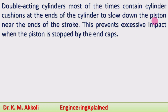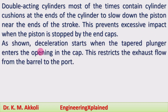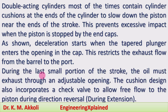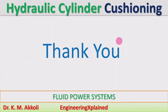Double acting cylinders most of the times contain cylinder cushions at the ends of the cylinder to slow down the piston near the ends of the stroke. This prevents excessive impact when the piston is stopped by the end caps. As shown, deceleration starts when the tapered plunger enters the opening in the cap — this restricts the exhaust flow from the barrel to the port during the last small portion of the stroke. The oil must exhaust through the adjustable opening. The cushion design also incorporates a check valve to allow free flow to the piston during direction reversal during the extension of each stroke. This is about the hydraulic cylinder cushioning — thanks for watching, if you like, share, subscribe and comment.